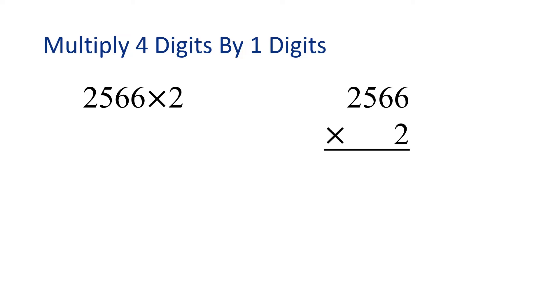Now let's multiply 2566 times 2 using the same strategy. 2 times 6 is 12. We carry the 1. Multiply 2 times 6 plus 1. 2 times 6 is 12 plus 1 gives us 13. Now we carry the 1. Now multiply 2 times 5 and then add 1. 2 times 5 is 10 plus 1 gives us 11.